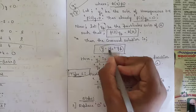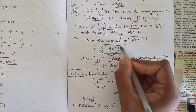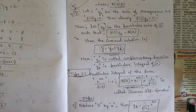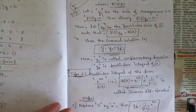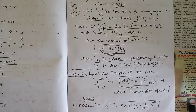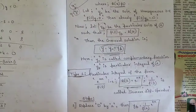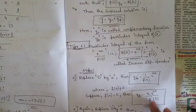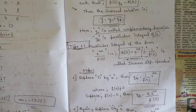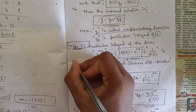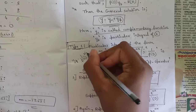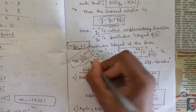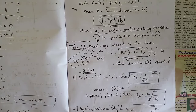The general solution for the non-homogeneous equation is y = yc + yp. The yc is the same thing we solved in the homogeneous part — it remains the same. We write the equation in terms of f(D), put it as f(m), find the roots, and write the final solution for yc. After that we find the particular integral. The formula for the particular integral yp is: yp = (1/f(D)) · r(x).